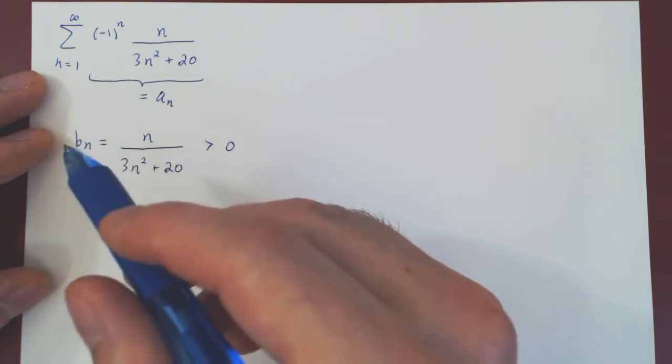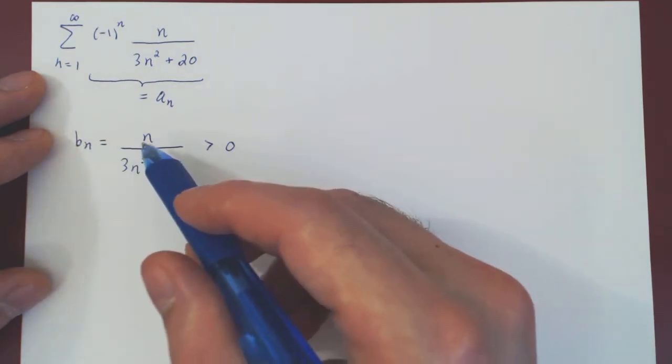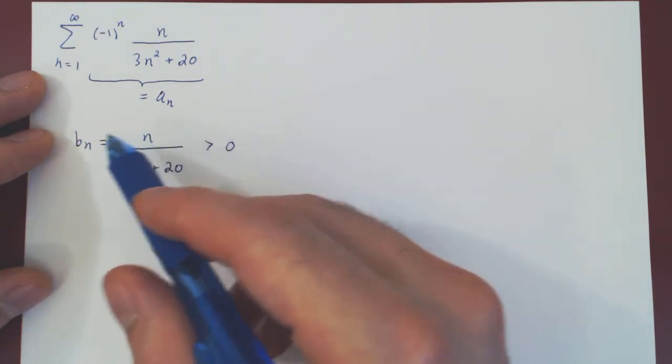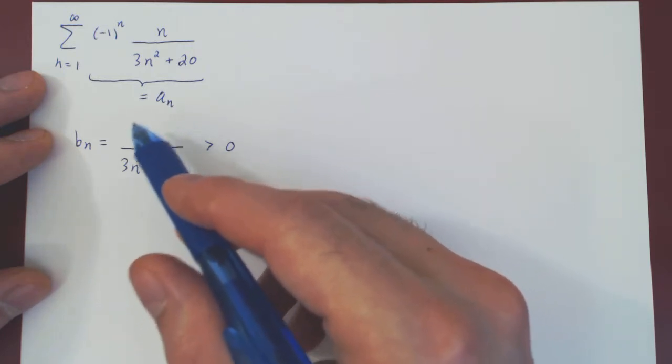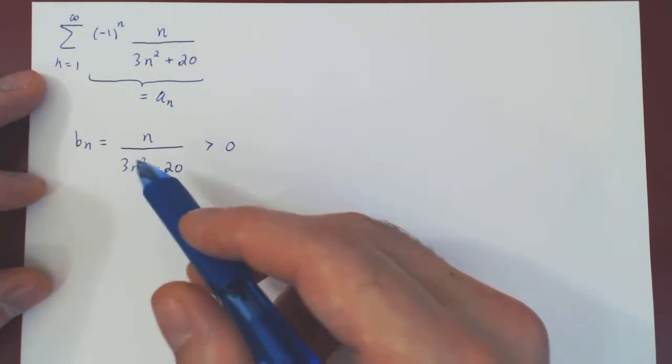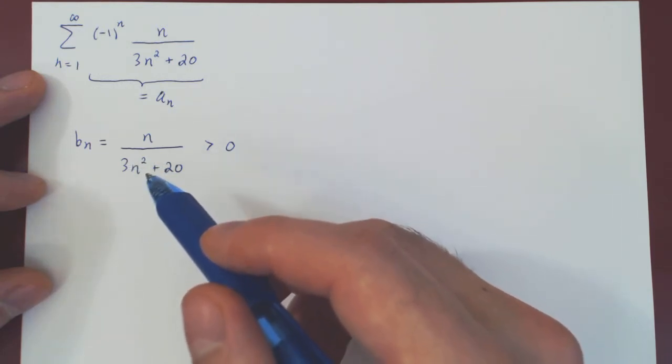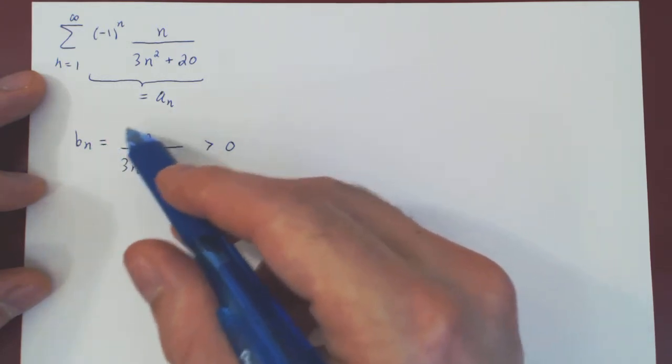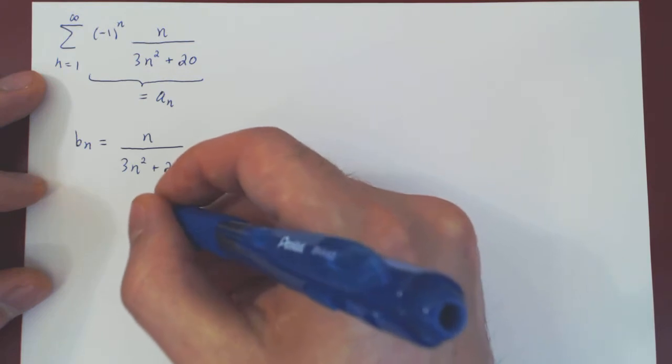Now here, it is not obvious that bn is eventually decreasing, as bn is the ratio of an increasing function over an increasing function. So here, to prove rigorously that bn is eventually decreasing, we have to look at the differentiable function.